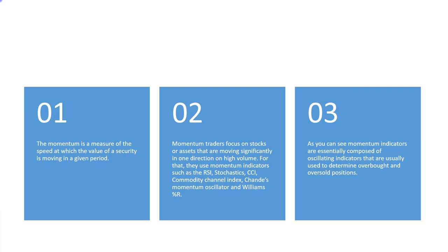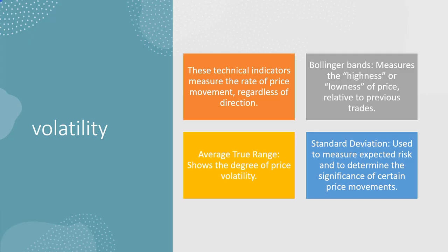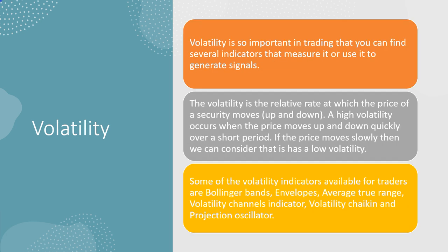Momentum is a measure of the speed at which the value of a security is moving in any given period. Volatility indicators tell us how much volatility is in the market — if the market is getting too volatile you may want to get out, or when it's quiet you can put your stop loss closer to your opening price, while high volatility may require placing your stop loss much farther away due to the swings in the marketplace. There are several indicators that measure volatility or use it to generate signals.